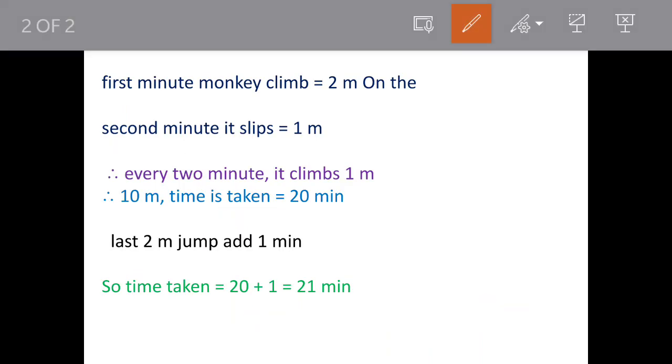We have a pillar with a height of 12 meters. In the first attempt, the monkey climbs 2 meters. So from the top we remove 2 meters, leaving a balance height of 10 meters.